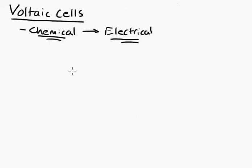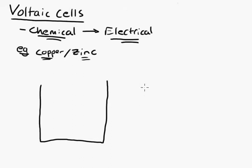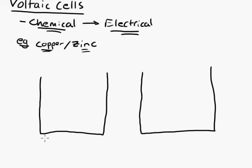There are two chemical reactions taking place, so let me give you the example of a copper-zinc cell. This is a copper-zinc voltaic cell. One chemical reaction is occurring with copper, and the other with zinc. A voltaic cell has two half cells — one on each end. We'll start with the copper half cell, which I'll place on the right-hand side.